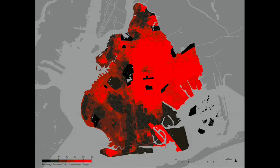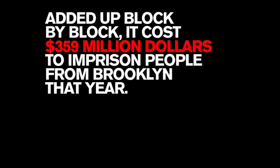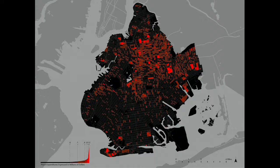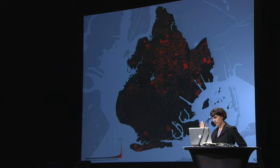Prison geographies intersect very strongly with geographies of poverty and race. This is the percentage of people of color in Brooklyn, the percentage of people who live in poverty, and the percent of adults admitted to prison. Added up block by block, it cost $359 million to imprison people from Brooklyn that year. When you add the cost of housing people in prison, this map is expressed in millions of dollars — what's bright red is over a million dollars to keep people from that census block in prison.